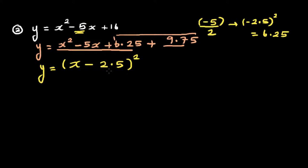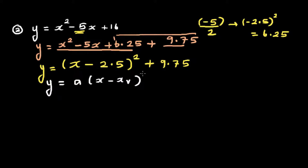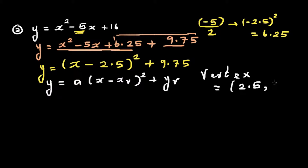Just to confirm, if you expand x minus 2.5 squared: x times x gives x squared, then minus 2.5x minus 2.5x gives minus 5x, and minus 2.5 squared gives 6.25. Adding 9.75 brings it back to 16. Comparing with the vertex form — a times x minus xv squared plus yv — the vertex is 2.5 comma 9.75.